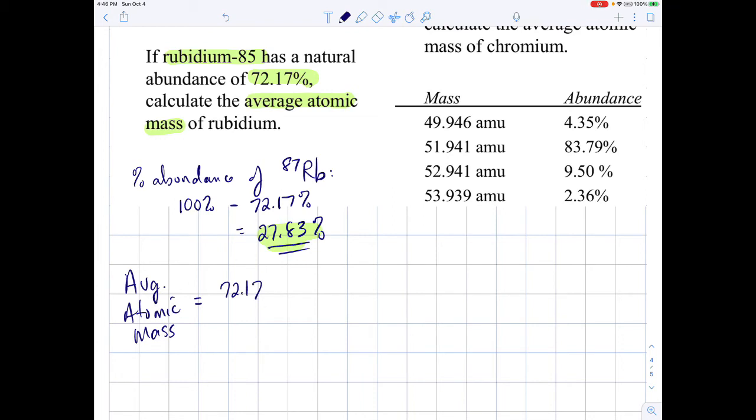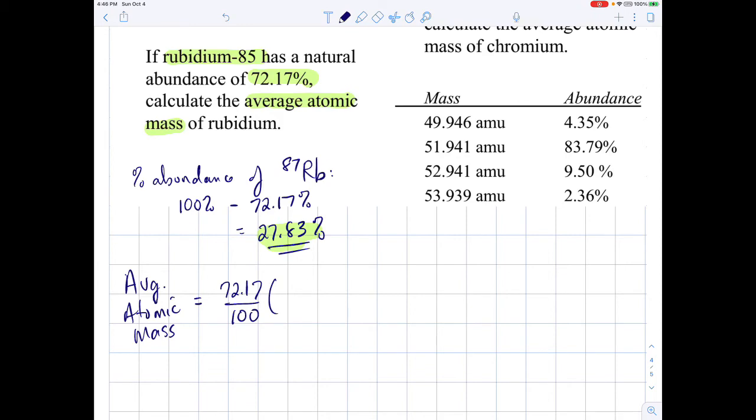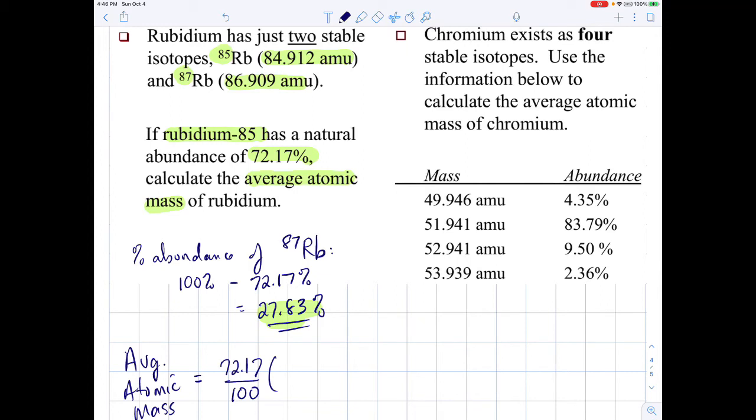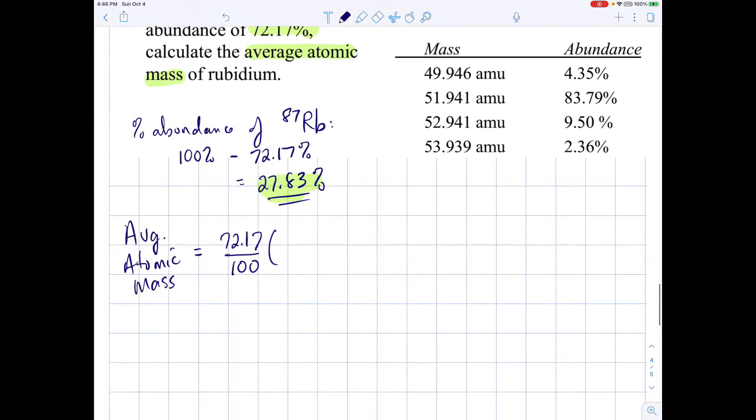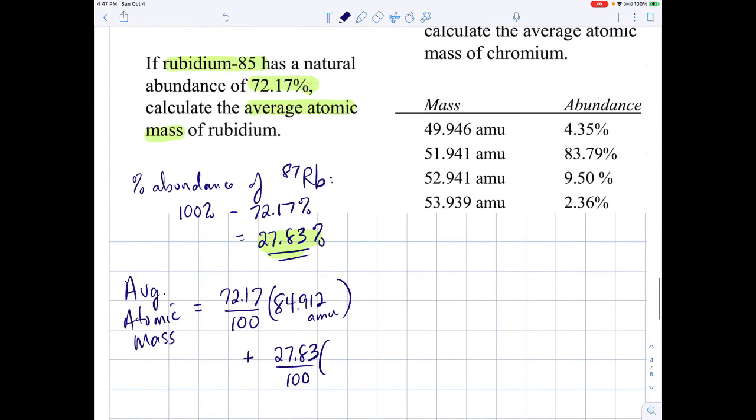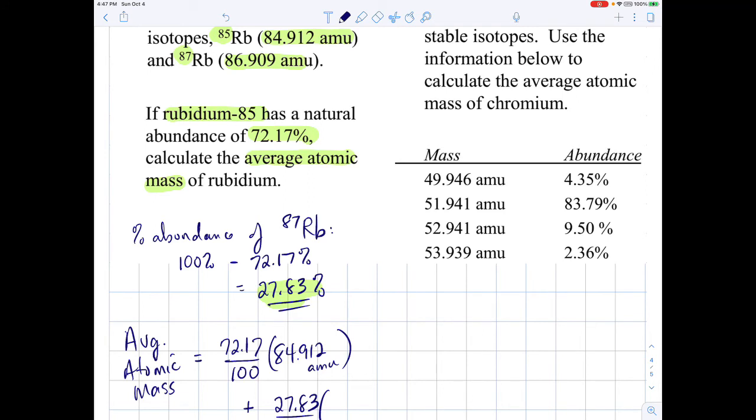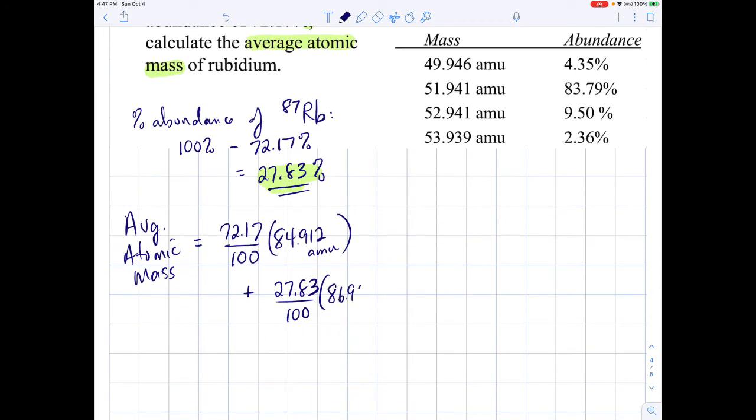We take the abundance of rubidium-85, so 72.17 percent. I write it like that as a fraction, 72.17 percent. If I write it like this, it's converting it back to a decimal. This will be 0.7217 when I divide by 100. We take that abundance and we multiply by its atomic mass. So up above we were told that rubidium-85 had the mass 84.912. So multiply this by 84.912 AMUs.